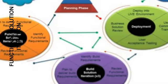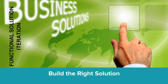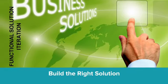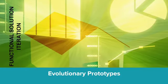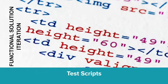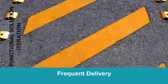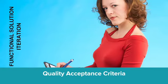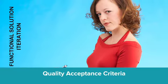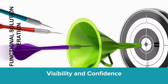The functional solution iteration phase is about building the right business solution. The team — developers and user representatives — must work together. Make use of evolutionary prototypes, prepare test scripts, and work through time-box plans focusing on frequent delivery of products. Identify the quality acceptance criteria, ensure delivery is benefit-directed, create visibility, and gain confidence.